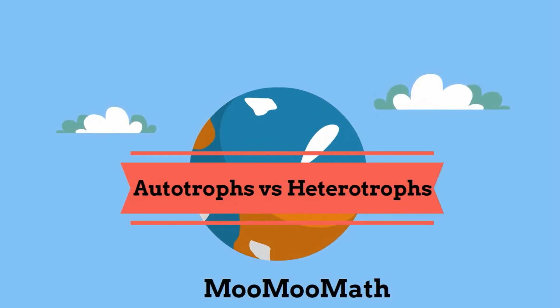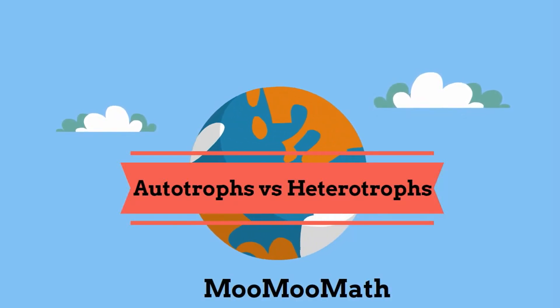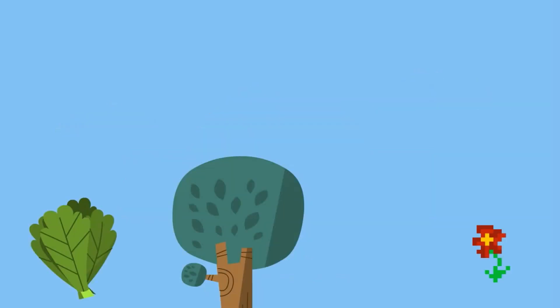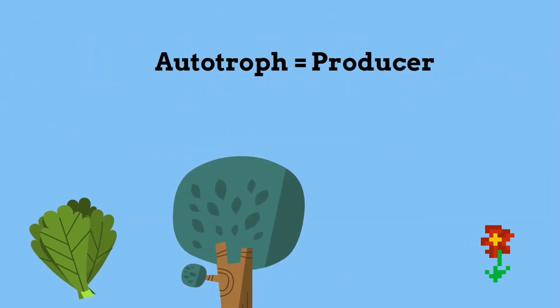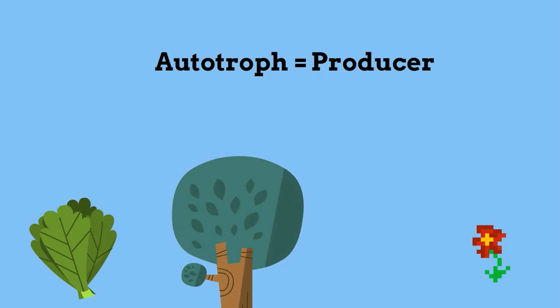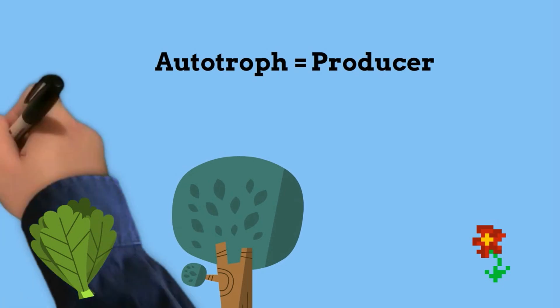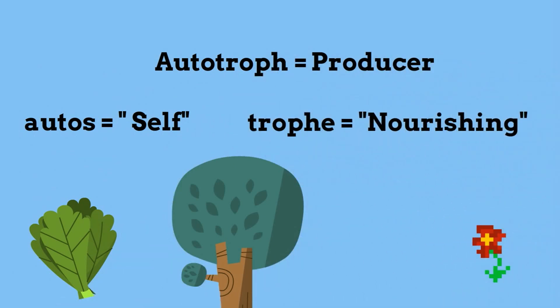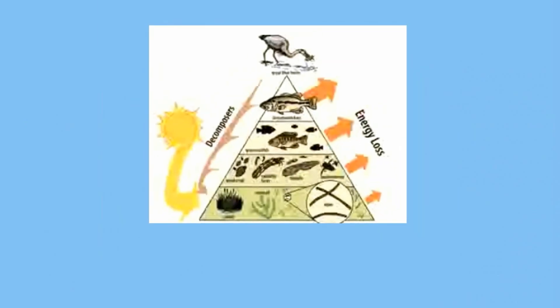Welcome to Moo Moo Math. An autotroph, also called a producer, is an organism that can self-feed. The word autotroph comes from the Greek word 'autos' meaning self, and 'troph' meaning nourishing or nutrition. Autotrophs are the producers in a food web and they are the bottom base in an energy pyramid.